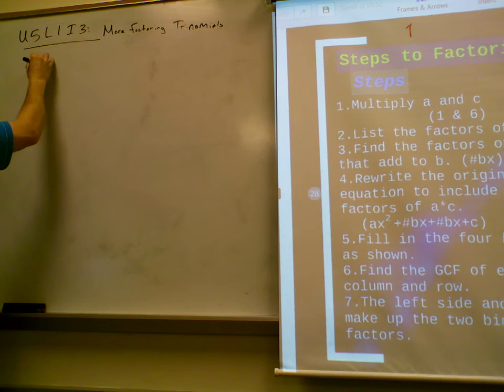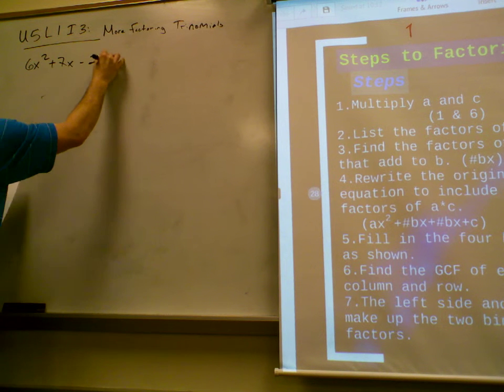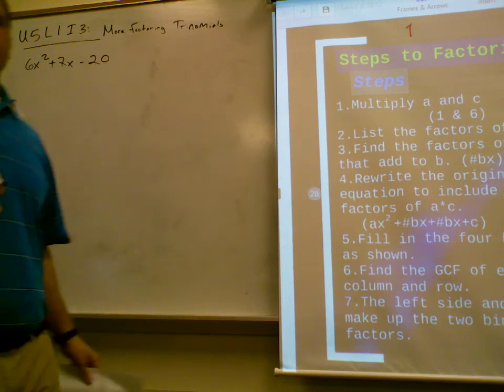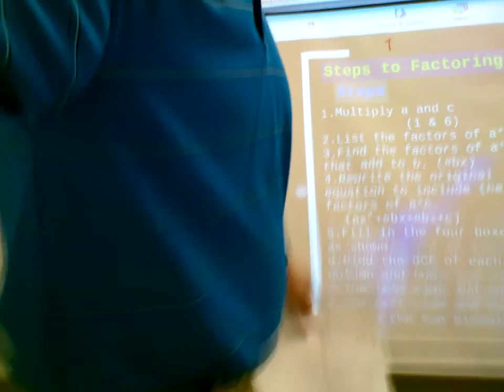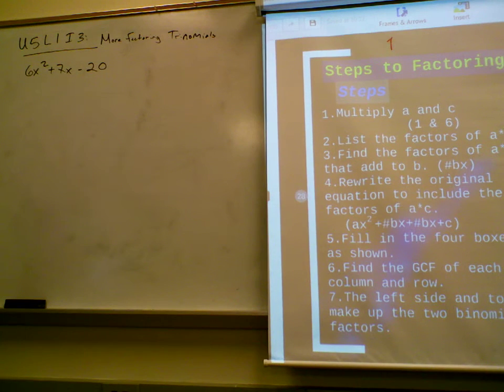So, here's our trinomial, 6x squared plus 7x minus 20. I'm going to try to factor this trinomial. What is our A value? 6. What's my C value? Negative 20.